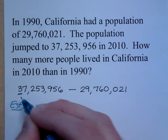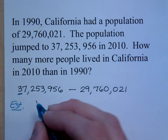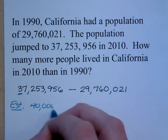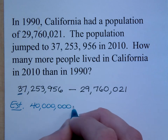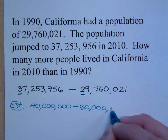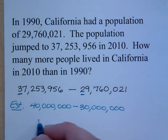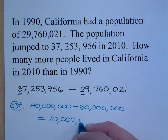With front-end rounding, if I round to the nearest ten million here, what do you get? That's about forty million, minus thirty million. So that's going to give me thirty million. So my estimate should be about ten million.